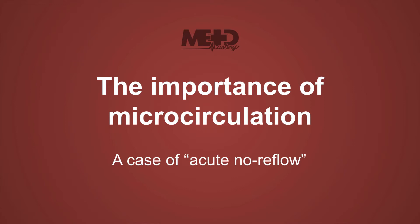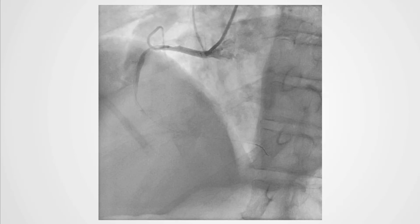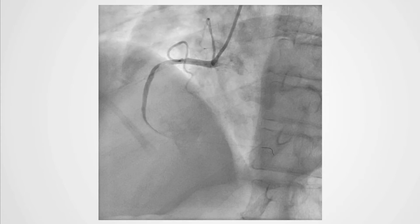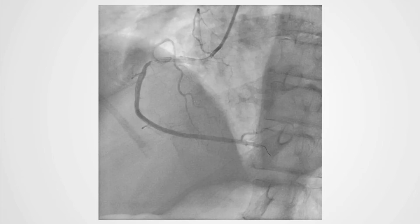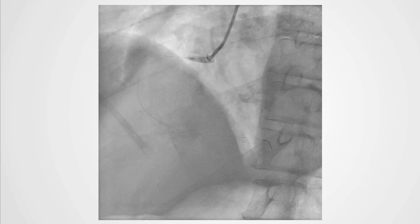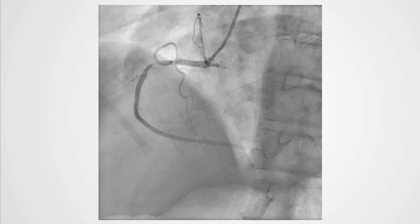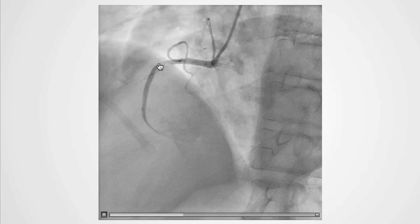Let's highlight the importance of the microcirculation by looking at a real case of acute no-reflow. In this case, one can see a right coronary angiogram in a patient presenting with an acute coronary syndrome. We'll discuss the specific anatomy in detail in subsequent chapters. In this right coronary artery, you can see a very tight narrowing or stenosis in the proximal vessel, highlighted on the screen now.